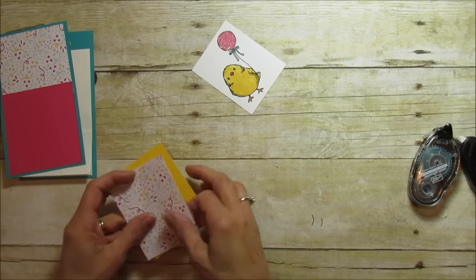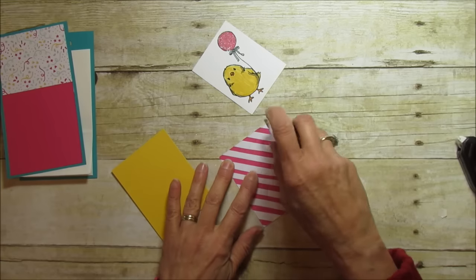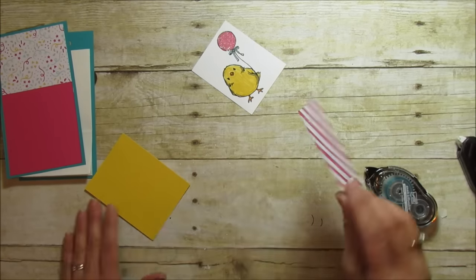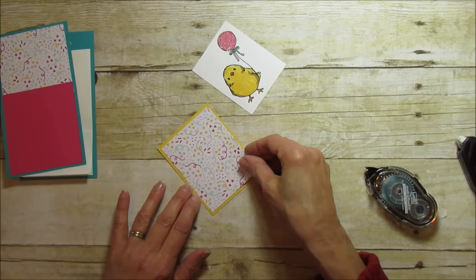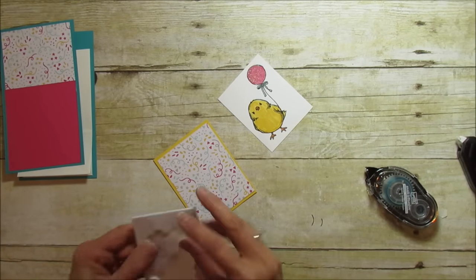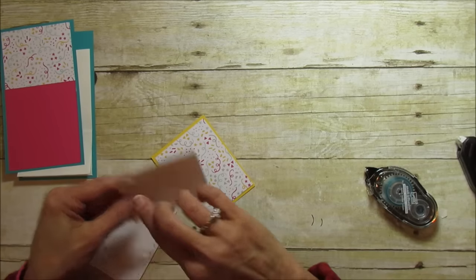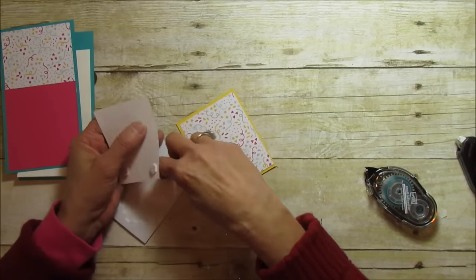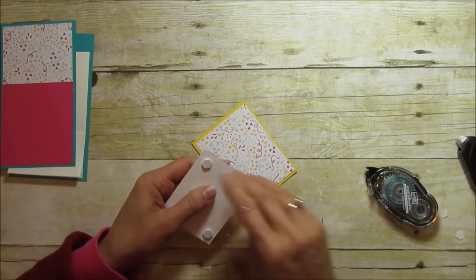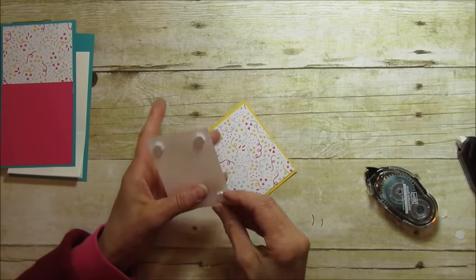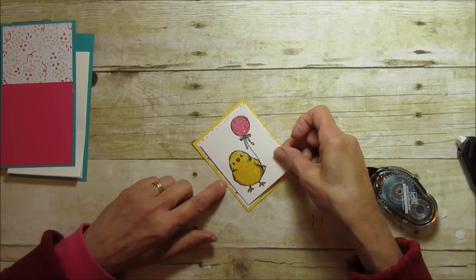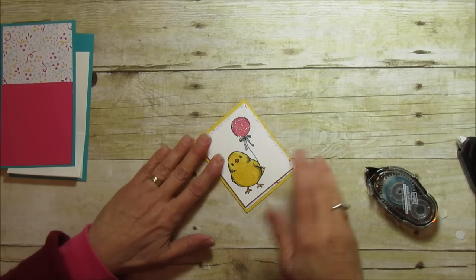Okay so now we're ready to put the rest of it together and I'm going to attach the designer series paper to my Daffodil Delight cardstock mat. Then I'm going to actually pop him up with some dimensionals onto the other, it just adds a little bit dimension to it. And before I put it on the front of our bag I'm going to have to stamp our sentiment so we have that all ready to go.